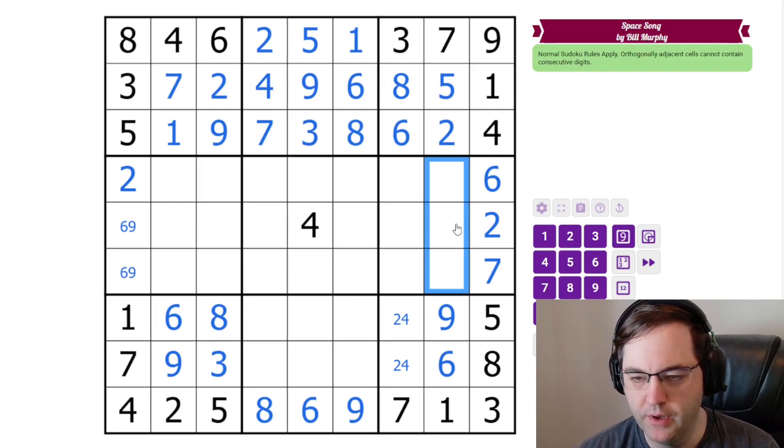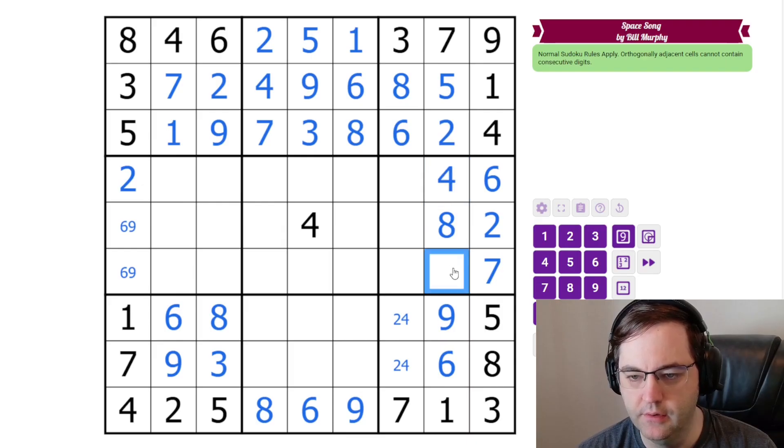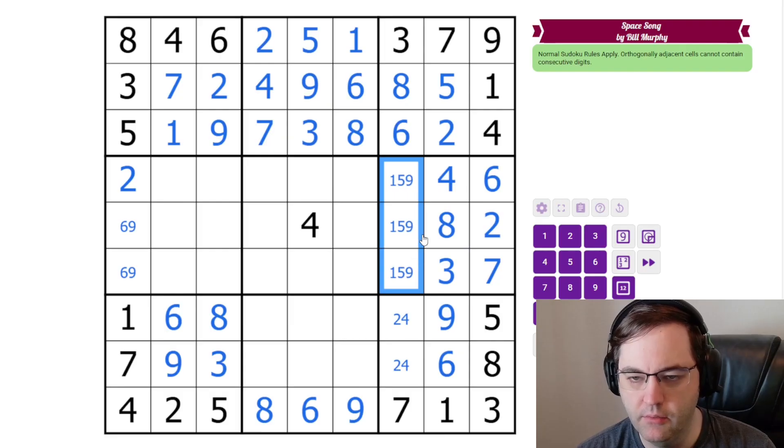And the 7 can't go next to the 6. These are 3, 4, 8. 3 and 4 can't go next to each other. So, that's the 8. The 3 can't go next to the 2. And then these are 1, 5, 9. I will go ahead and fill those in so we can look at them. None of these are consecutive with each other. But this can't be 5 because of the 6 and the 4. This can't be 9.